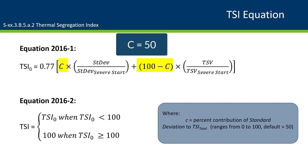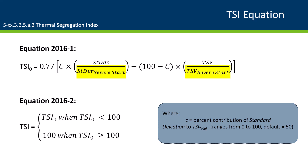Both types of segregation are equally important, and therefore the standard deviation and TSV index are equally weighted at a 50% contribution. Dividing the standard deviation and TSV index by their severe start values creates a unit-less index, so it will be the same in English and SI units. The 0.77 offset normalizes the data to a 1 to 100 scale, as shown in Equation 2016-2.